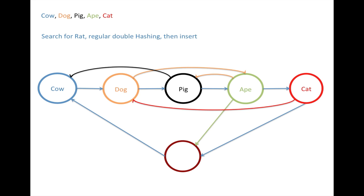So suppose we have here an example: cow, dog, pig, ape, cat, and they were all entered into our table without any clashes. So cow was mapped here, dog here, pig here, ape here, and cat here.